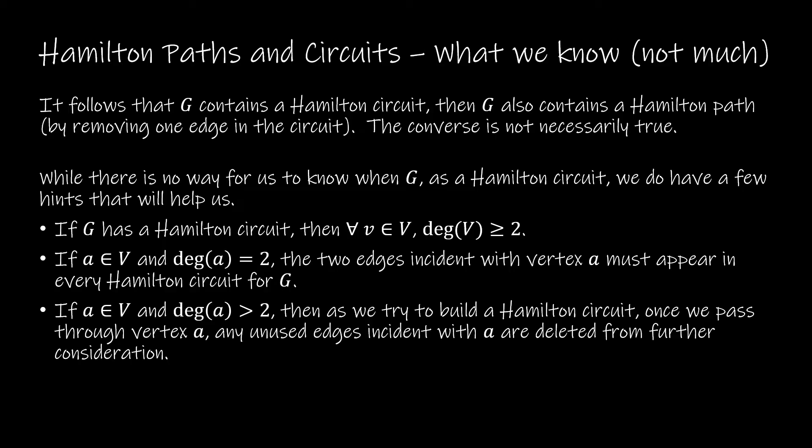If G has a Hamilton circuit, then each vertex has a degree of at least two. So right away, if we look at a graph and we have a vertex of degree one, it's not going to have a circuit. It could have a path, but not a circuit, because we would have to begin and end back at the same vertex.